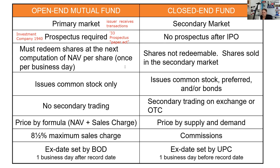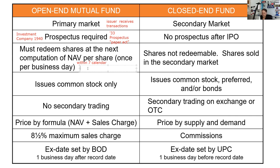Open-end mutual funds must meet redemption requests within seven calendar days of that request. That's a major distinction — in open-end funds, you're not selling your shares; you're actually redeeming the shares. You're not selling them to someone else, because that would be a secondary transaction. And that's always being done based on the next computation of the NAV — whenever you're getting in or out of an open-end mutual fund, you're always doing so based on the next calculation of the NAV.